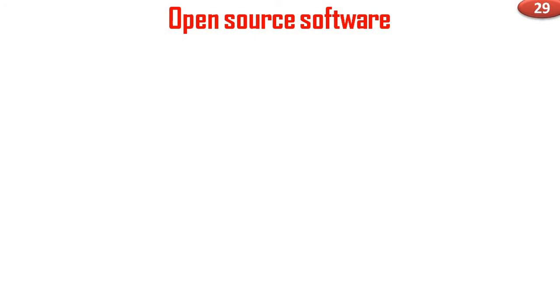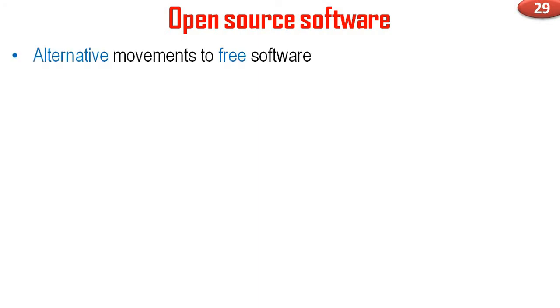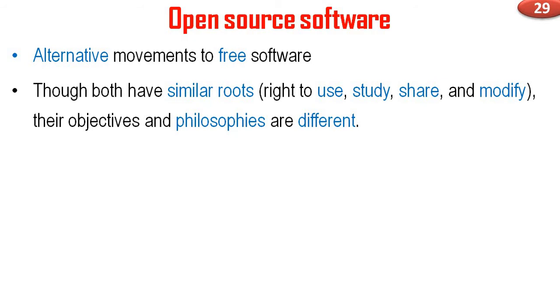The technical aspect is that open source software and free software are almost the same. But philosophically, both are different. Open source software is an alternative movement to free software, and free software is an alternative movement to open source software. Though both have similar roots, they are distinct.